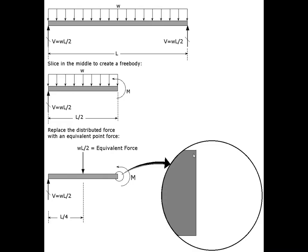If we draw a beam, you'll notice here that we have a simple horizontal beam with a uniform load W, which would be in pounds per foot or kips per foot in the English system of units. The total load on this beam would be W times L, so if W is in kips per foot and L is in feet, we end up with a total load of W times L in kips.